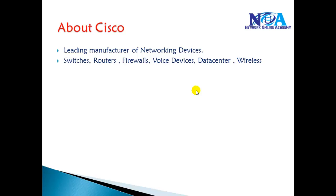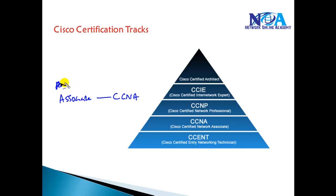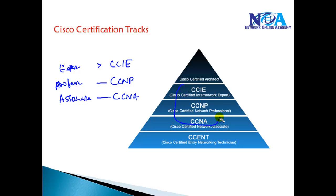As we are doing a CCNA course, here's a basic overview of Cisco. Cisco provides different certification tracks for different levels. Cisco majorly divides into three certification levels: the first is associate level, which we call CCNA — Cisco Certified Network Associate; the second is professional level, CCNP — Cisco Certified Network Professional; and then expert level, CCIE — Cisco Certified Internetwork Expert.